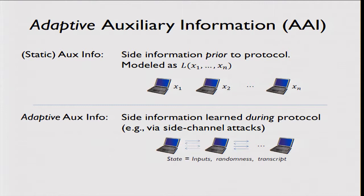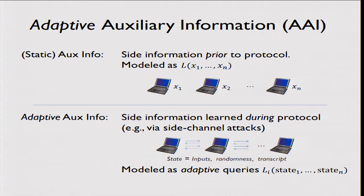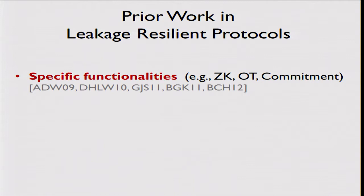Today I want to talk about adaptive auxiliary information. We address what happens if the adversary, perhaps via a side-channel attack or other means, is able to learn partial information about the secrets of honest parties during the protocol. Whereas static auxiliary information is some function of the secret inputs, now there are more secrets — not only the inputs, but also randomness generated as part of the protocol execution. We model adaptive auxiliary information by allowing the adversary to request functions L_i and receive back L_i evaluated on the states of the honest parties.